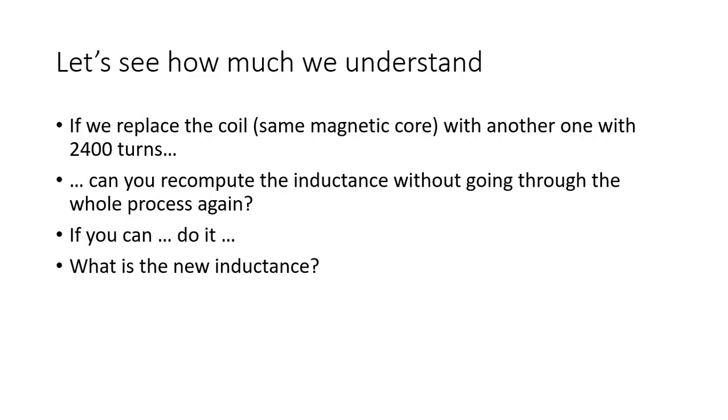Now check out. The flux is the same. The number of turns is twice as many. So the flux linkage is twice as big as before. Check it out. The flux linkage is twice as big. The current is only one half. We divide flux linkage by current. We get four times the inductance that we had before. That is what would happen.